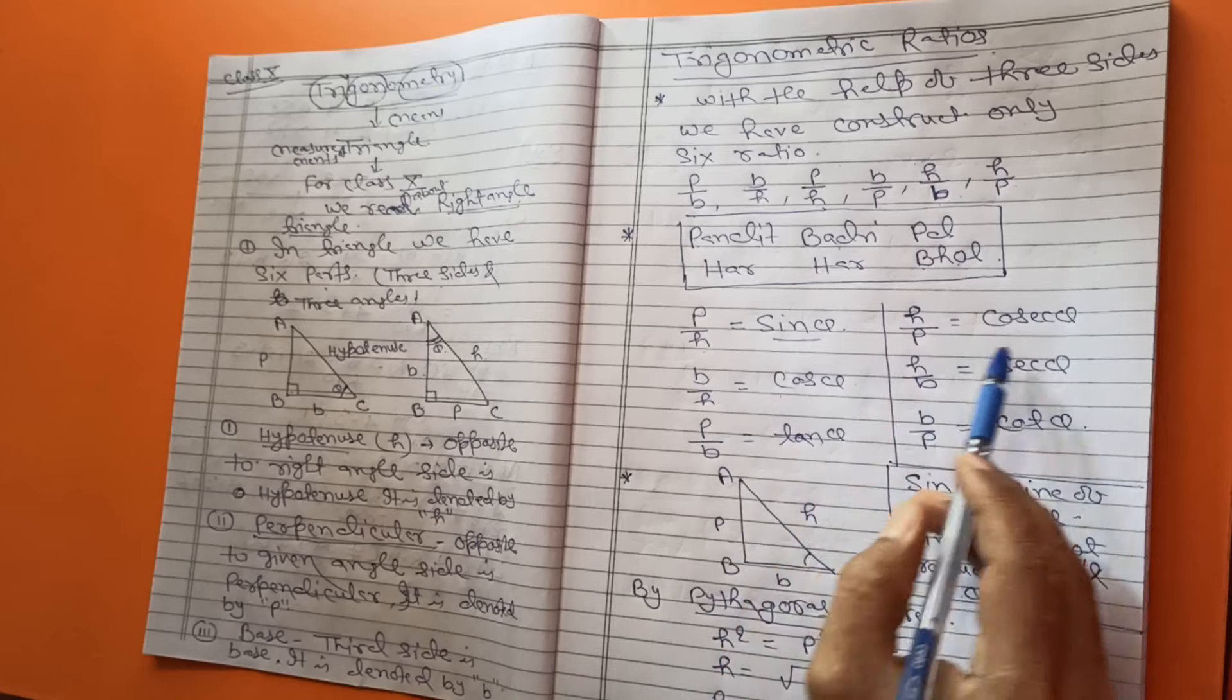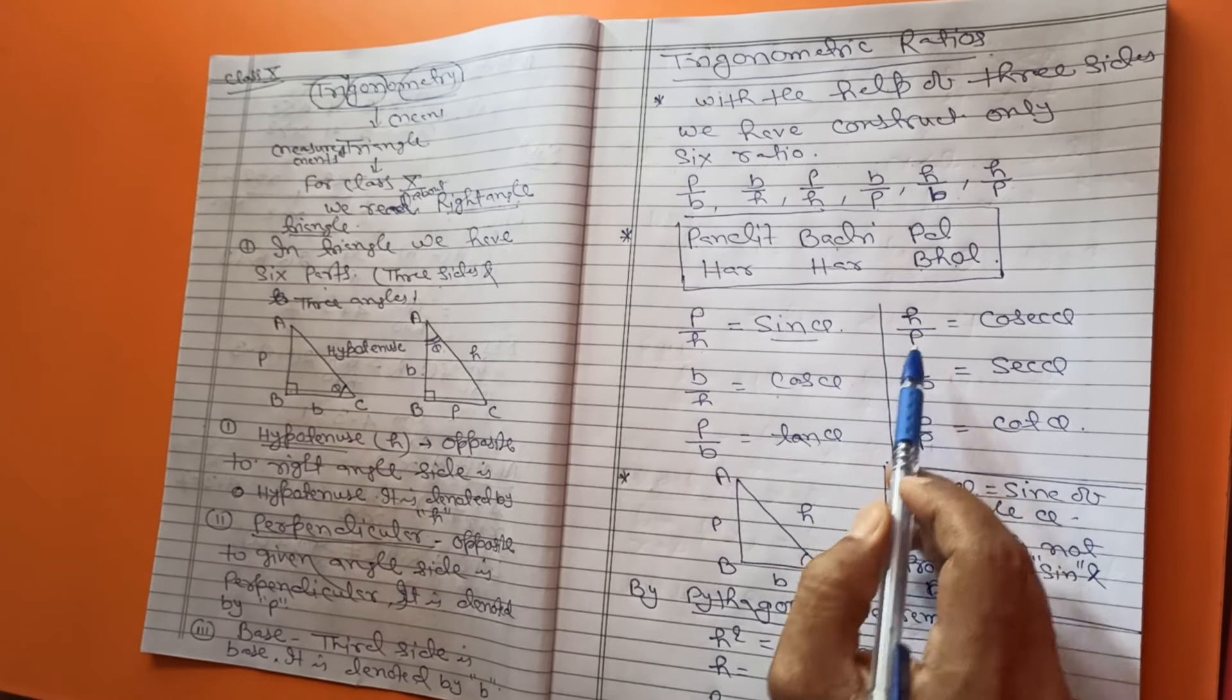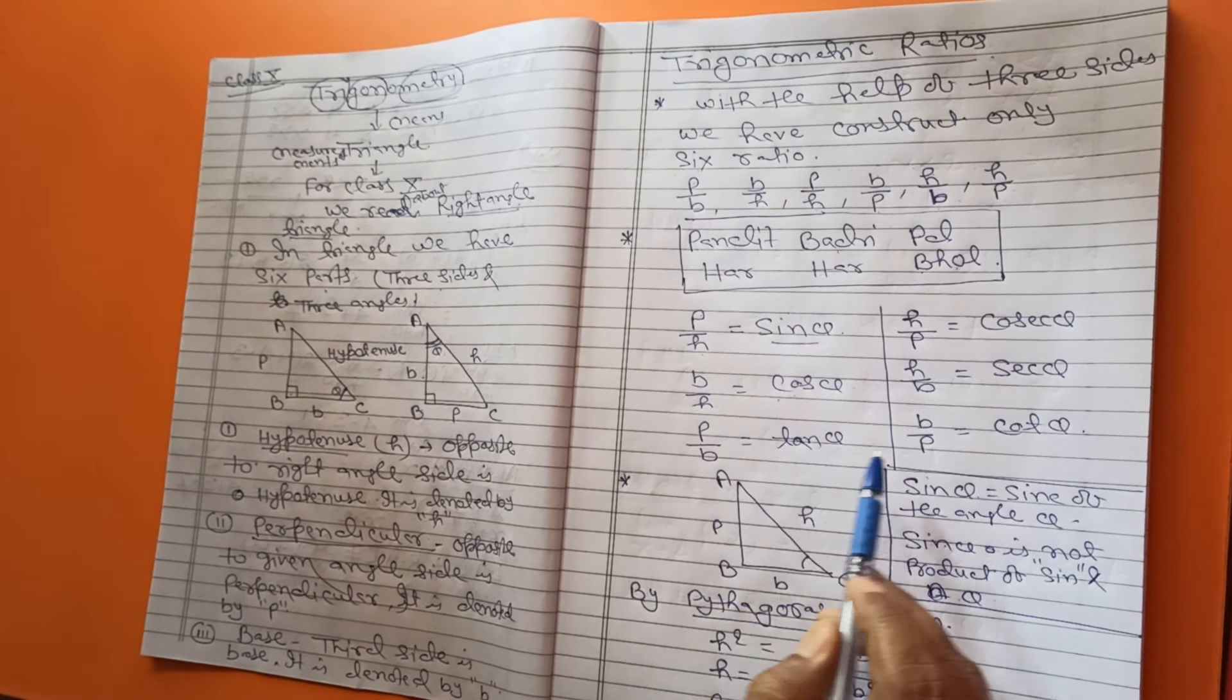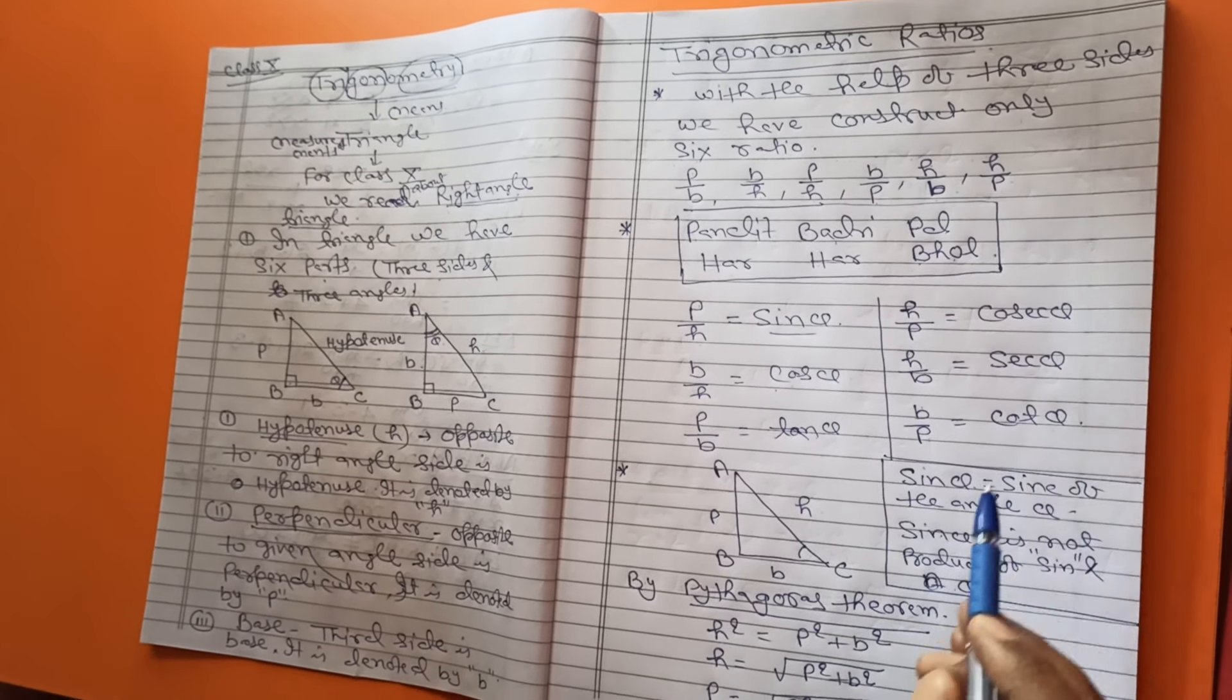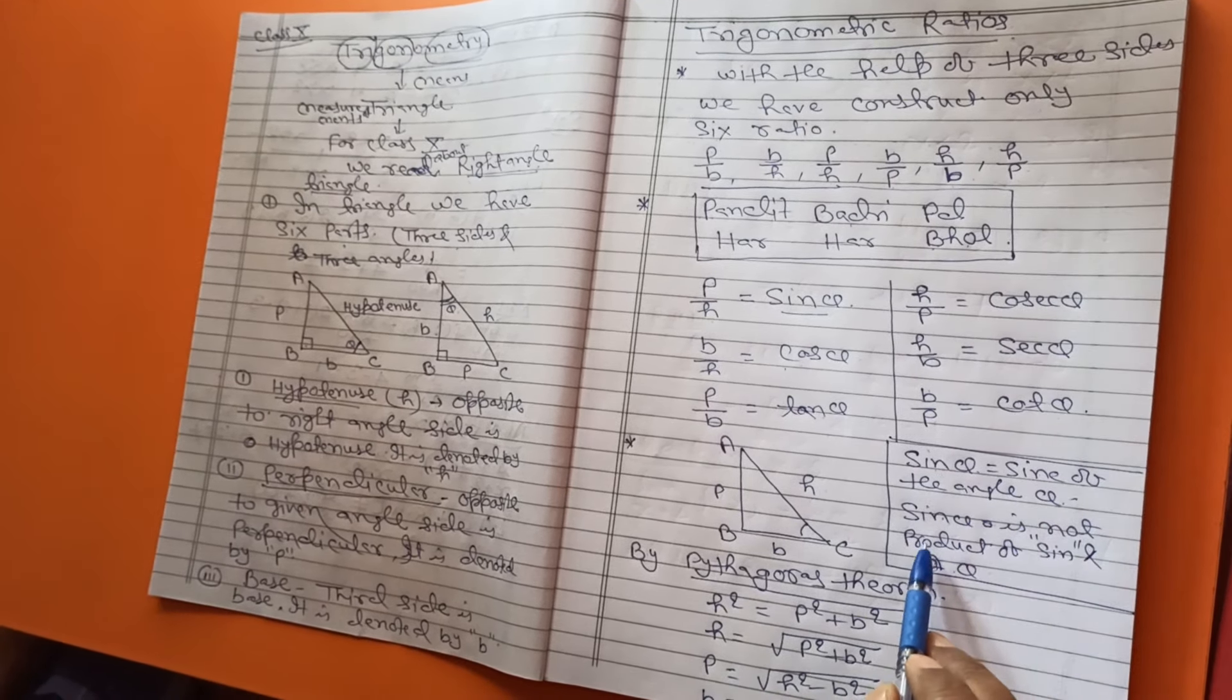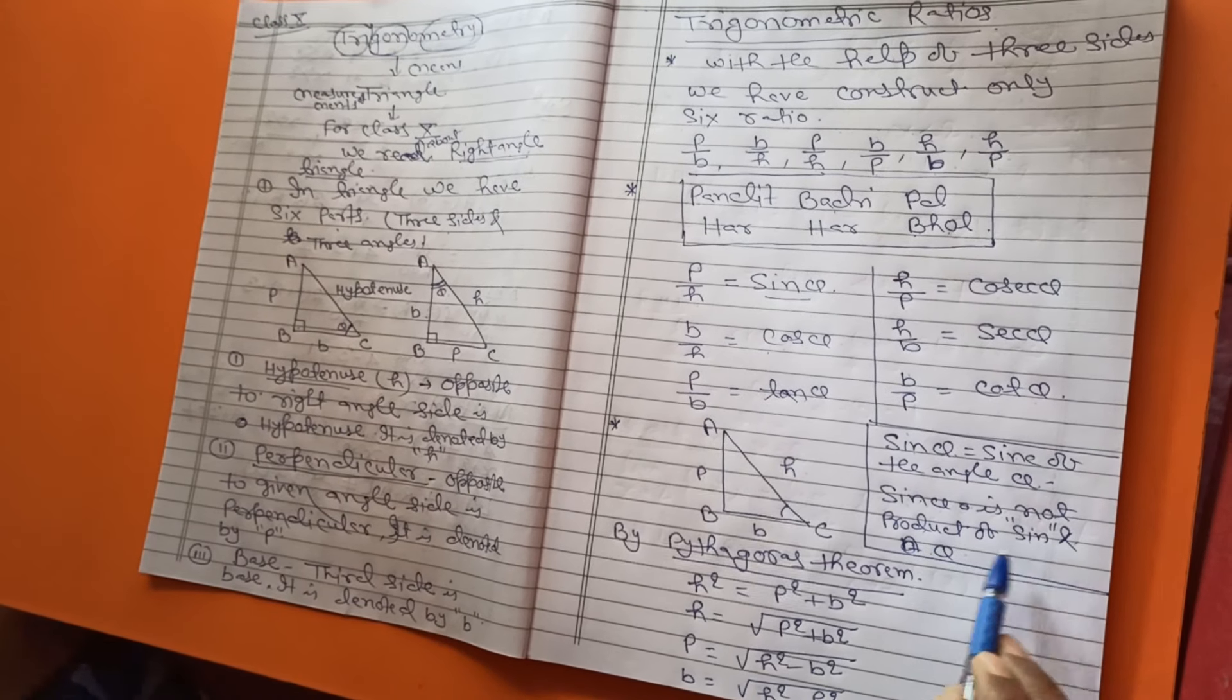Opposite to sin is called cosec theta. They become H by P. Opposite to cos is sec theta, H by B. Opposite to tan is B by P. It is called cot theta. You remember, sin theta means sin of the angle theta. This is not sin theta is not product of sin and theta.